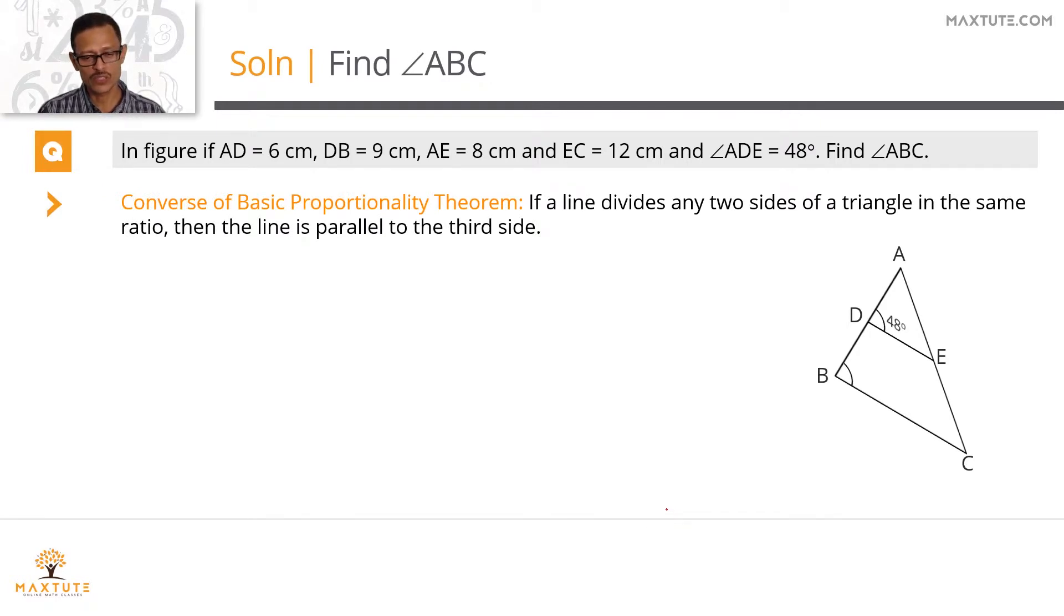The converse basically reads as follows: If a line divides any two sides of a triangle in the same ratio, then the line is parallel to the third side. We're talking about in this case line DE. If it divides the two sides AB and AC in the same ratio, then DE will be parallel to BC. Let's check out whether that happens.